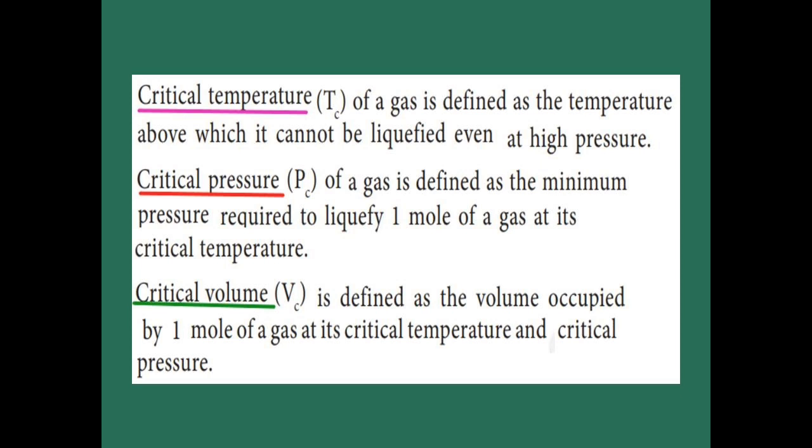For example, for carbon dioxide, above 31 degrees Celsius — say 34 or 48 degrees — you refer the graph and there is no liquefaction obtained even when pressure increases. Critical pressure is defined as the minimum pressure required to liquefy one mole of gas at its critical temperature. Critical volume is defined as the volume occupied by one mole of gas at its critical temperature and critical pressure.